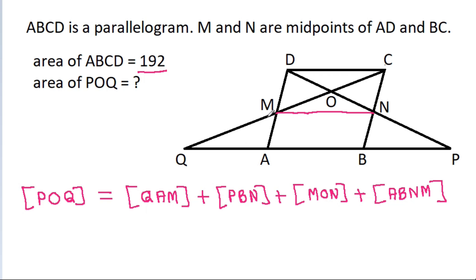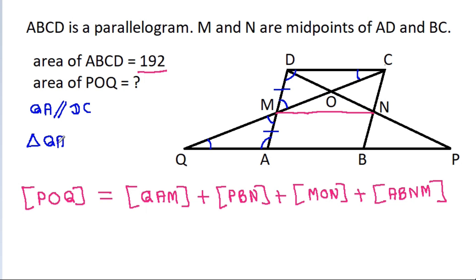These two angles are opposite angles, so they will be equal. And QAM is parallel to DC, so these two angles will be equal and these two angles will be equal. Also, AM is equal to DM. Therefore, triangle QAM will be congruent to triangle CDM.